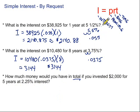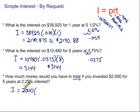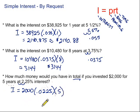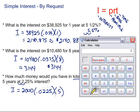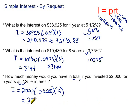First, we want to find the amount of money that we'll earn — the interest earned — for investing that $2,000. I, which is what we're looking for, equals P — the principal, $2,000 — times the rate: 2.25% moved two spots to the left gives us 0.0225 — times the time in years, five years. So: $2,000 times 0.0225 times 5. You make $225 for investing that money for five years at 2.25% interest.